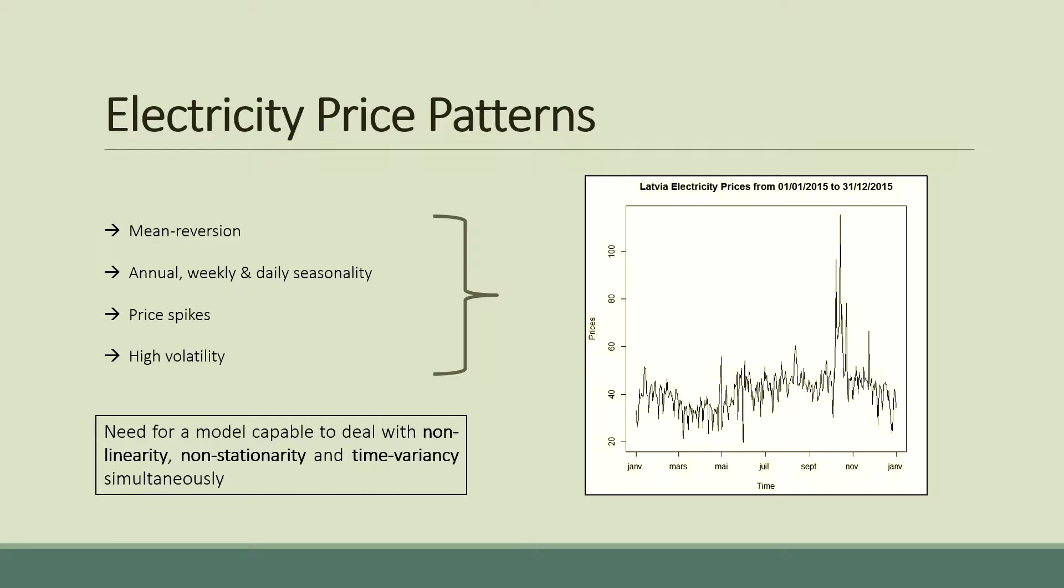As you can see on the graph, electricity prices present a very odd and unique behaviour that are observable in other financial or commodity markets. The four main electricity price patterns that are clearly visible are the mean reversion, several types of seasonality, unconstrained price spikes and tremendous volatility.